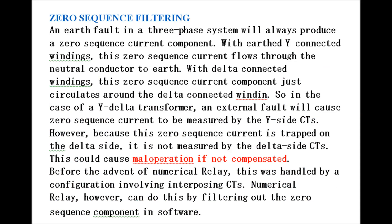Zero-sequence filtering: an earth fault in a three-phase system always produces a zero-sequence current component. With an earth Y-connected winding, this zero-sequence current flows through the neutral conductor to earth. With a delta-connected winding, this zero-sequence current component circulates around the delta winding. In the case of a Y-delta transformer, an external fault causes zero-sequence current to be measured by the Y-side CT; however, because this zero-sequence current is trapped on the delta side, it is not measured by the delta-side CTs. This could cause mal-operation if not compensated. Before numerical relays, this was handled using interposing CTs. Numerical relays, however, can filter out the zero-sequence component in software.